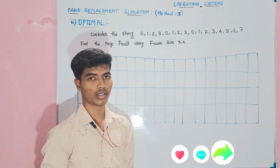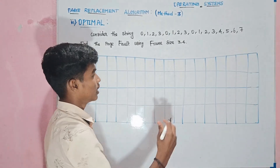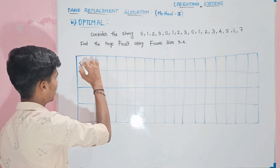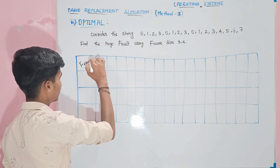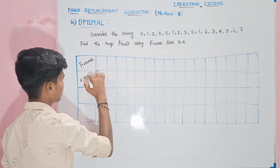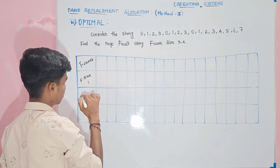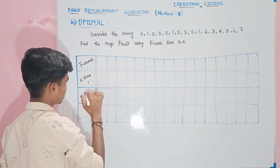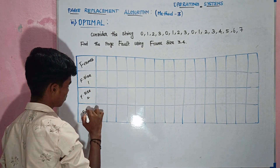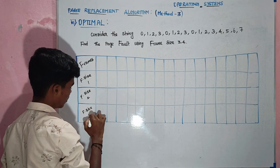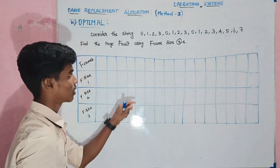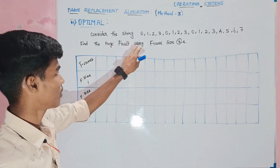We are going to see how to find the solution. So we will look at frame 1, frame 2, frame 3. Now the first one uses frame size 3 and 4. We are going to talk about frame 3 and 5.